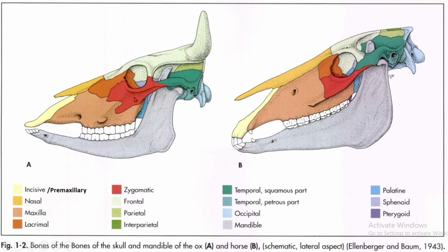This one is the zygomatic bone, which forms the prominent part of the cheek and the site of the eye socket. This one is the frontal bone, which forms the front part of the skull. This one is the parietal bone, and the interparietal bone is not clear in this picture. This one is the temporal bone, which forms the lower lateral part of the skull. This one is the occipital bone, which forms the base of the skull and encircles the spinal cord. This one is the mandible or lower jaw. This one in blue is the palatine bone, which forms the hard palate of the oral cavity. Sphenoid and pterygoid bones are not clear in this picture.